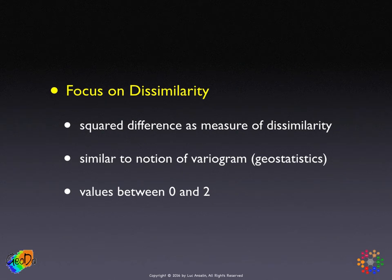Moran's I is all about similarity through the cross product. Geary's C, in contrast, is focused on dissimilarity — the difference between two adjoining locations. It uses the squared difference as a measure of similarity, which is similar but not identical to the notion used in a variogram in geostatistics, which we'll explore in a few weeks.